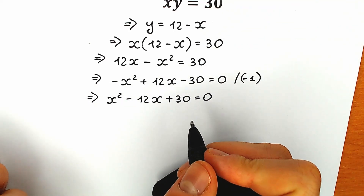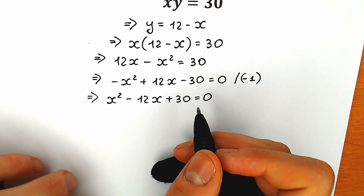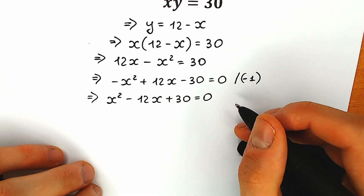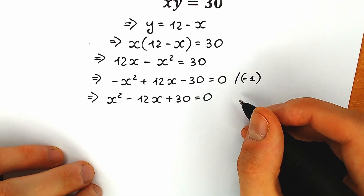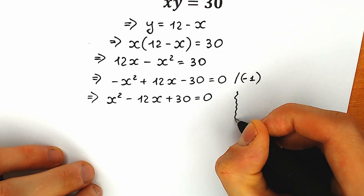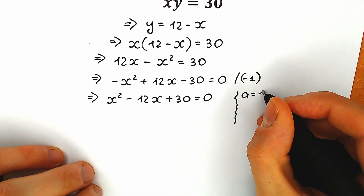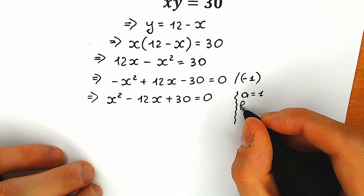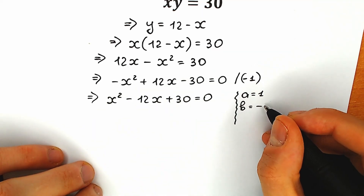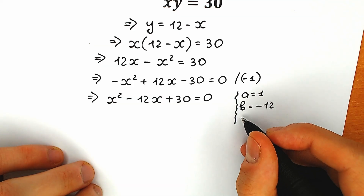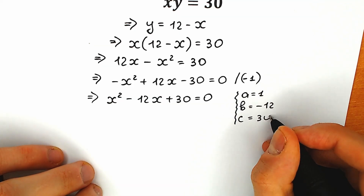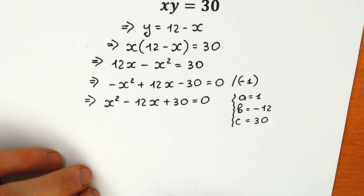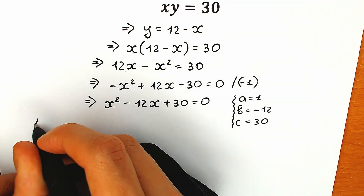This is a classic quadratic equation, so let's solve it. I prefer solving this quadratic equation using the basic method of coefficients. So from here a equals 1, b equals minus 12, and c equals 30. Right now let's find our discriminant.